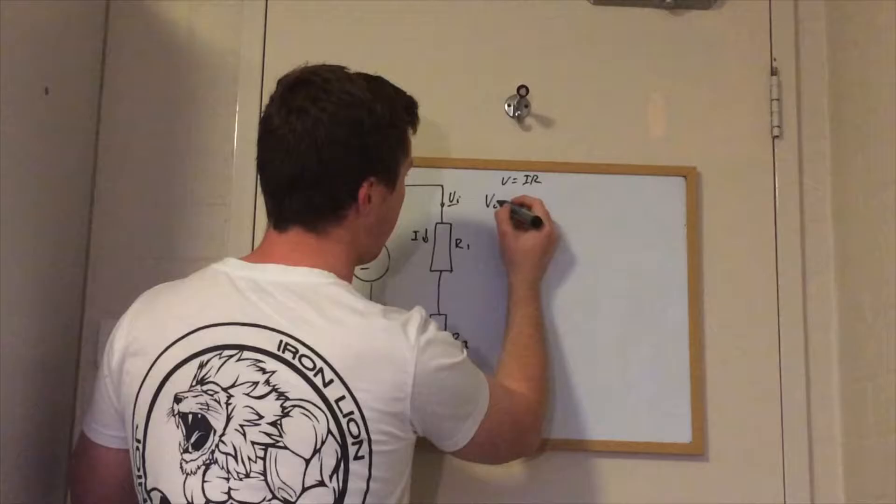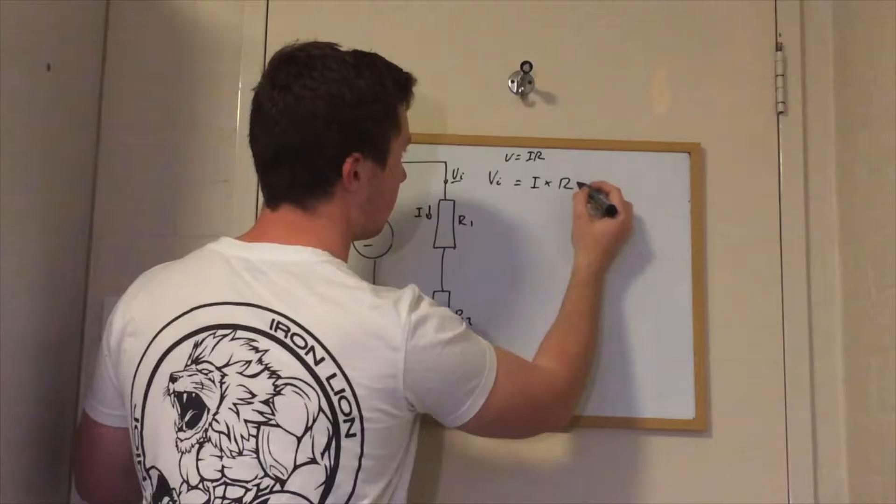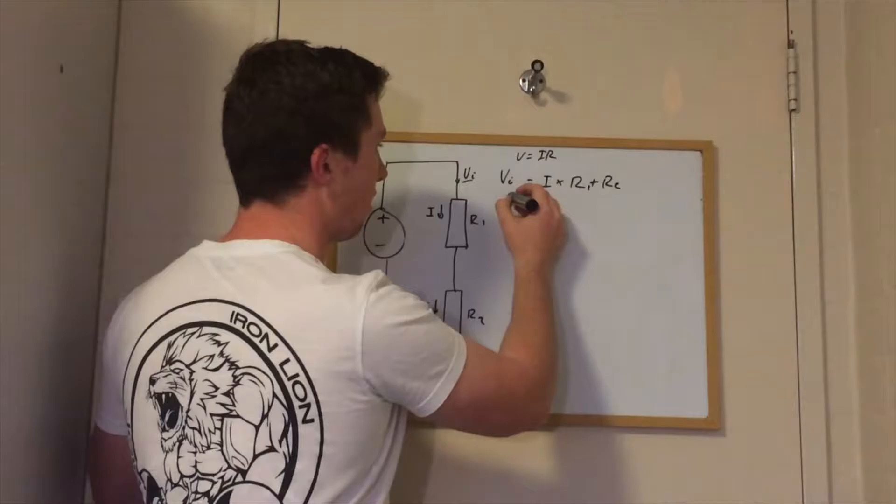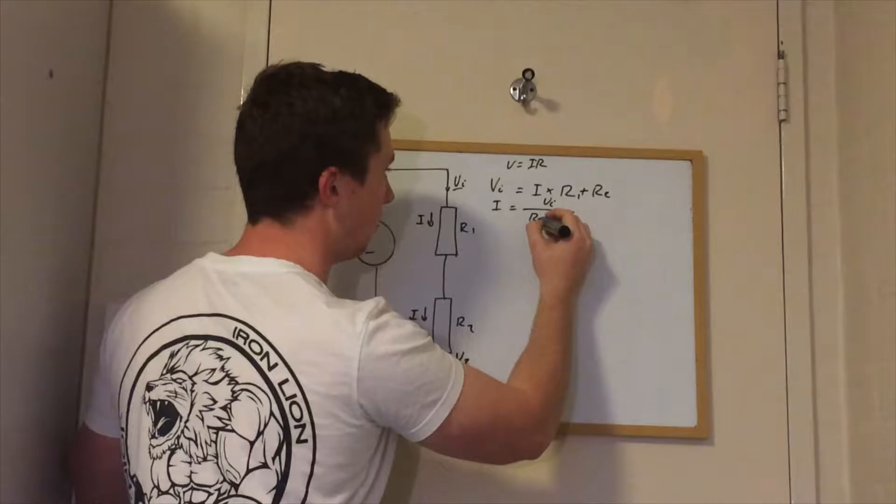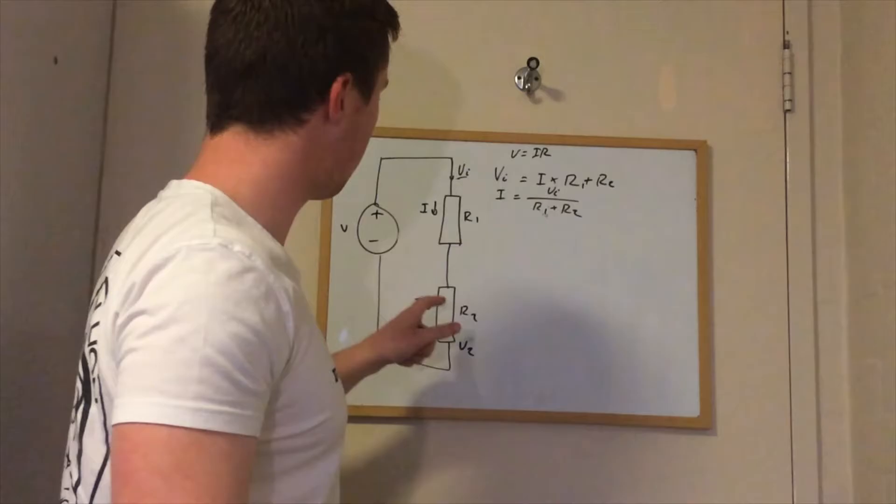So VI is equal to the current multiplied by the total resistance, because we're looking at the total resistance of the circuit. Rearranging that, we can get I equals VI over R1 plus R2.